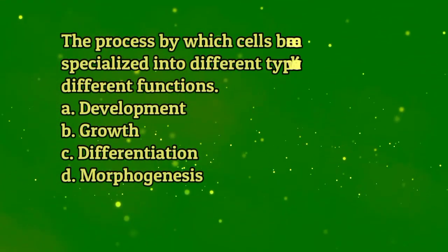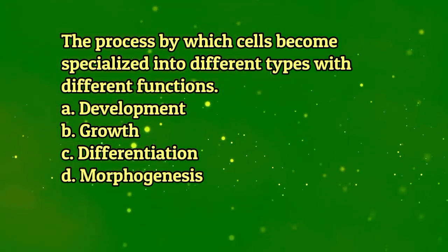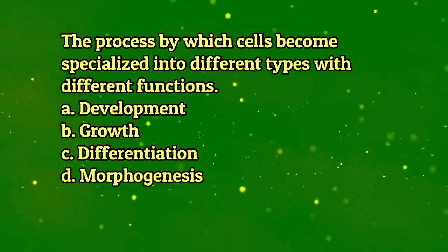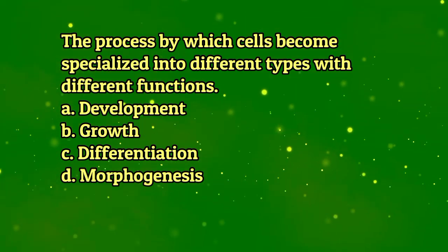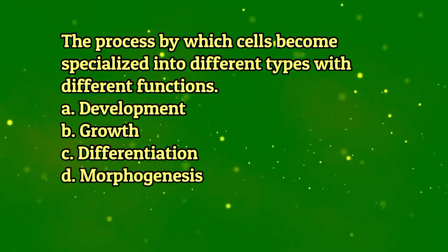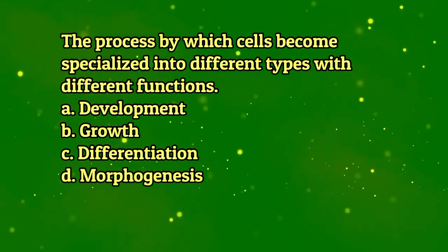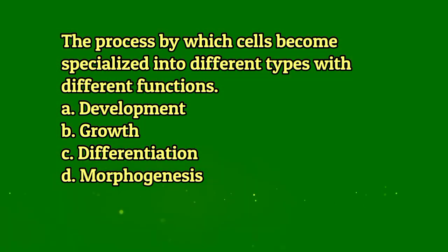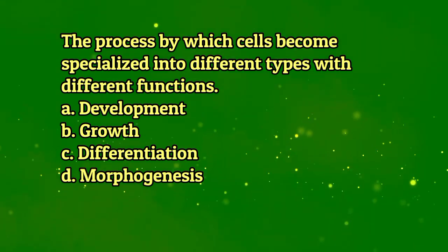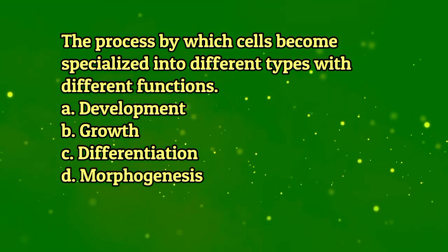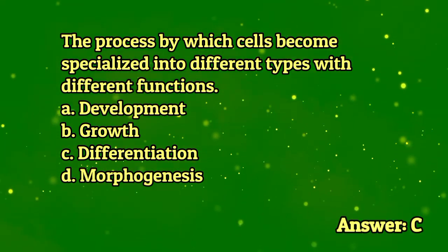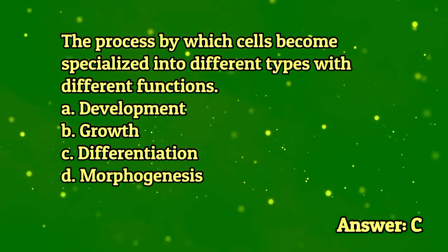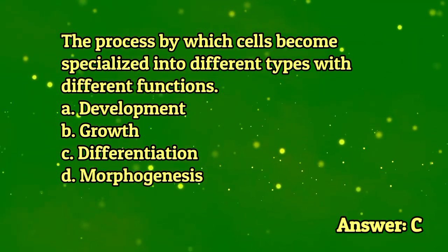The process by which cells become specialized into different types with different functions. A. Development. B. Growth. C. Differentiation. D. Morphogenesis. The answer is letter C.